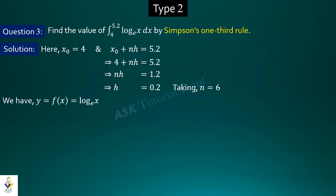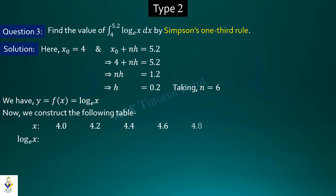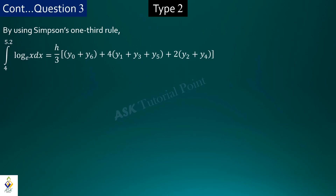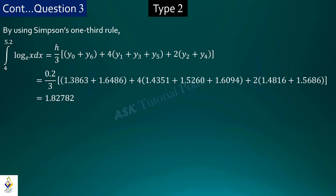The integrand is log x. We construct a table where the first row contains x values starting from 4 with constant gap 0.2 up to 5.2, and the second row contains the corresponding function values log x. For x equals 4, log x equals 1.3863 using the logarithm table. Placing the values in Simpson's one-third rule formula, the answer is 1.82782.